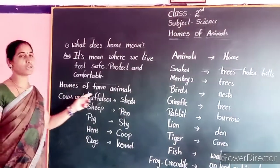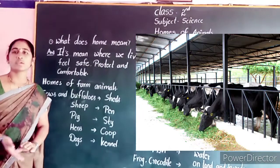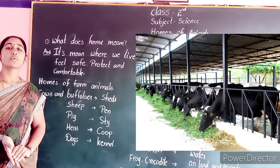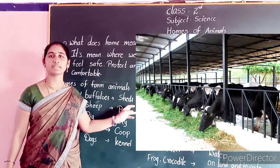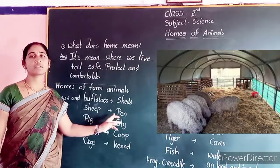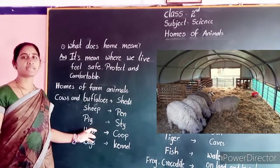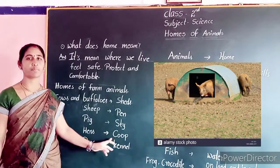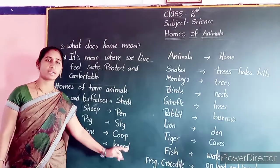Cows and buffalo are farm animals. Cows and buffalo live in a shed. Sheep live in a pen. Pigs live in a sty. Hens live in a coop. And dogs live in a kennel.